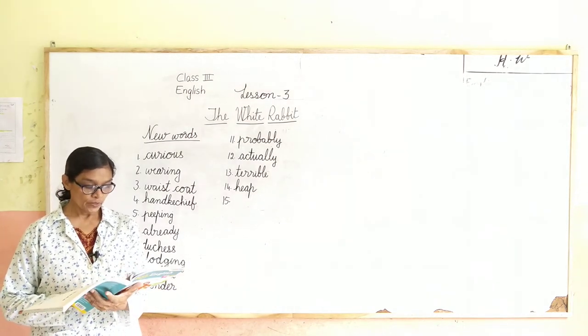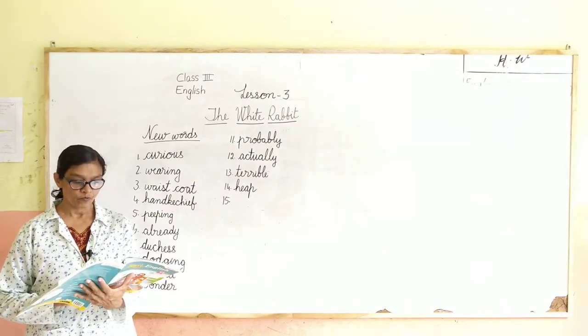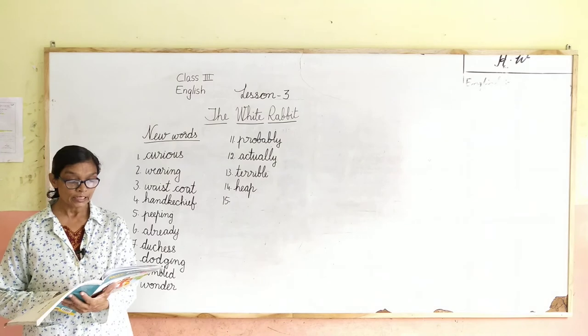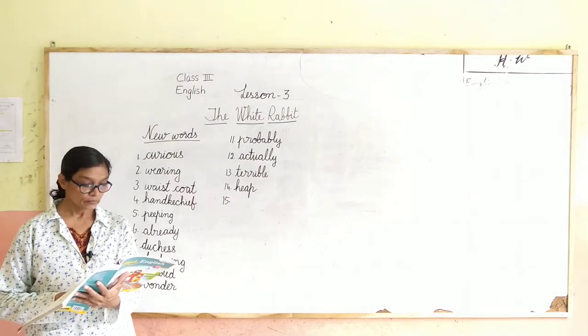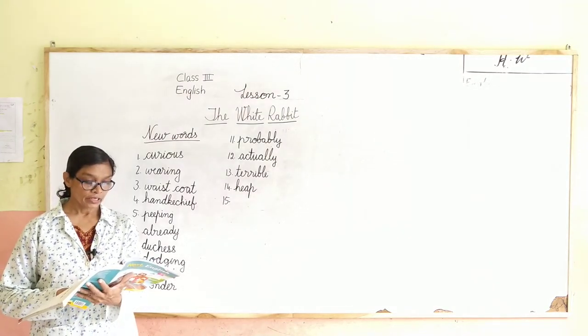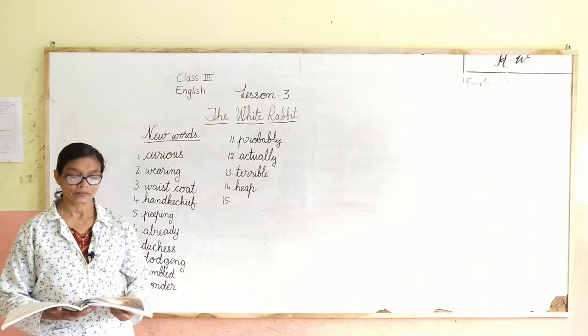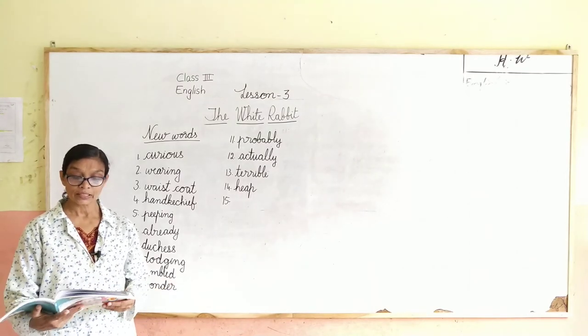Kab tak usko aisa adbhut mahasoos ho gaya. Kya gaya? Woh bohut niche, geherai mein jaake jaake, upar se girke, earth ka doosara side mein pahunch gaya. Itna niche gir gaya. It was just like a very deep well. Bohut gaharawala ek kuwa jaise lag raha tha. But there was no water in it. Lekin usme paani nahi tha. Kuwa jaise tha, lekin paani nahi tha.